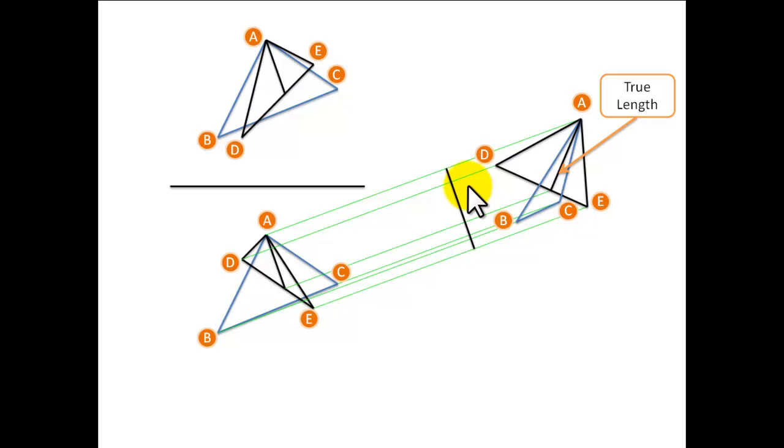Now we have a true length with only one more step before we finish this question. We need to look down our line, the true length of our line of intersection, to find the dihedral angle.